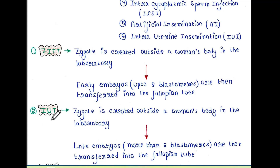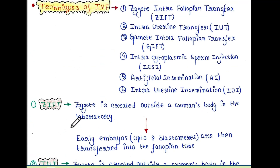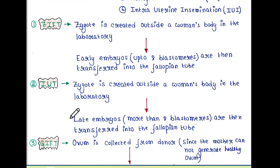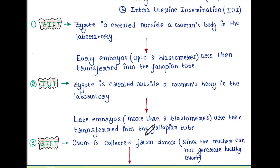Next technique is IUT. Here again the zygote is created outside a woman's body in the laboratory — this process is the same — but here the late embryos are chosen, like embryos with more than 8 blastomeres. And these are then transferred into the fallopian tube of the woman.